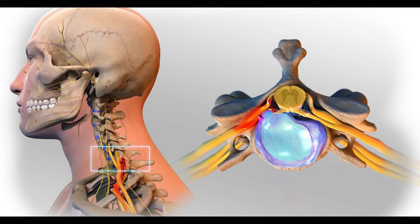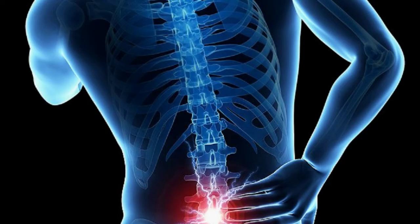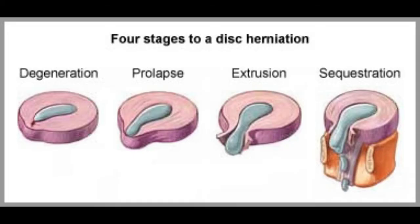People who have a herniated disc often experience numbness or tingling in the body part served by the affected nerves. Muscles served by the affected nerves tend to be weakened, which may cause you to stumble or impair your ability to lift or hold items.